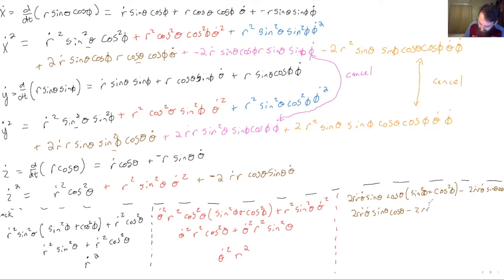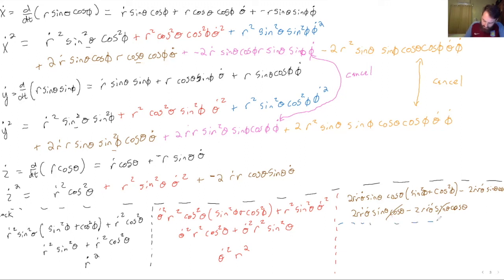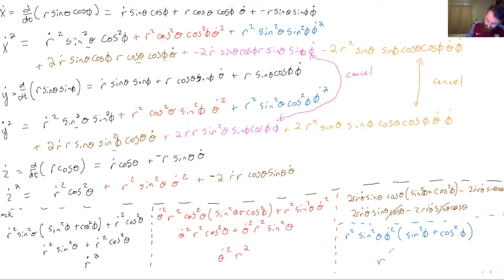Those terms cancel. The only thing left are the blue terms. There are two blue terms: r squared sine squared theta phi-dot squared with a sine squared phi from x-dot squared and a cosine squared phi from y-dot squared. Those reduce to 1, leaving r squared sine squared theta phi-dot squared.